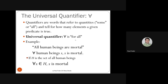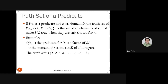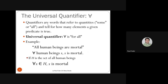Quantifiers are words that refer to quantities like 'some' or 'all,' telling us how many elements make a given predicate true. In our first example, 'all men are mortal,' the word 'all' is a quantifier — it states that for all X that are men, X is mortal.